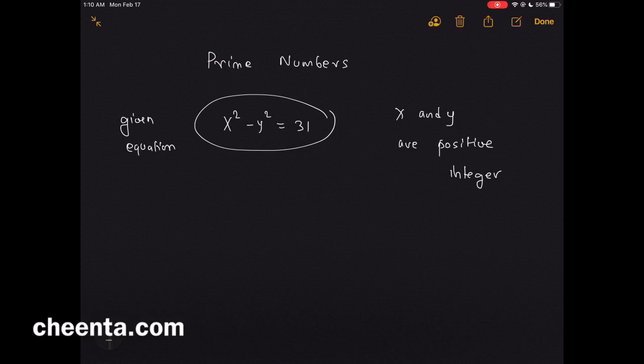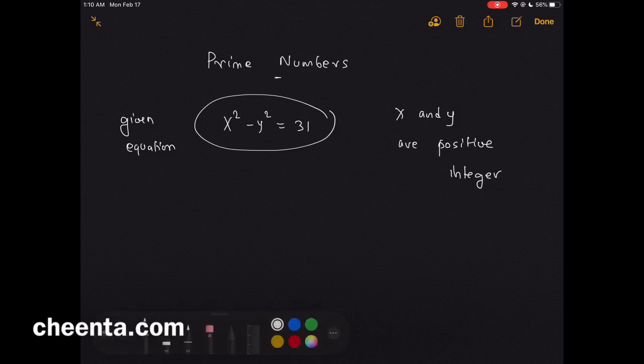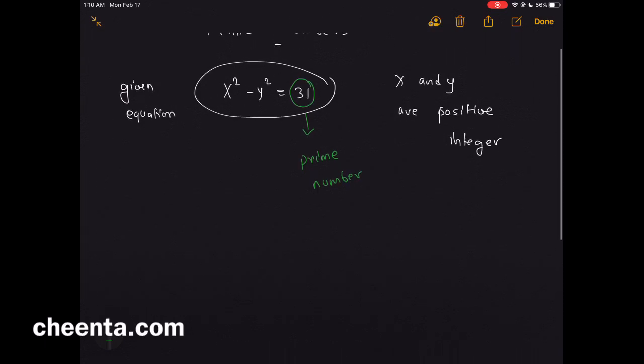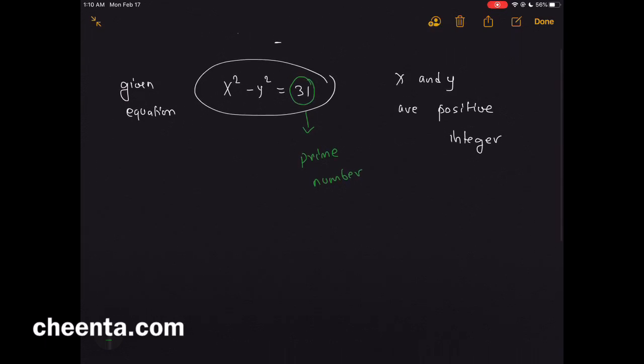It's not very hard. The main trick is to identify that 31 is a prime number, and the only way to factorize a prime number is itself times one. That's the only way.